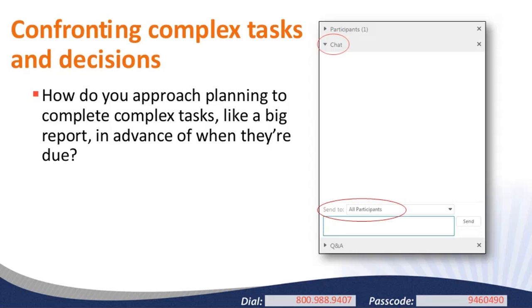We've got lots of strategies coming in. Several focus on breaking down the task into subtasks or more attainable bits. Getting help from other people—enlisting others and pulling in other talents and hands to make the work easier. To-do lists show up a lot, and color-coded lists can help you categorize work in different ways. Timelines, schedules, setting aside time. So we can see there are a lot of common threads here.